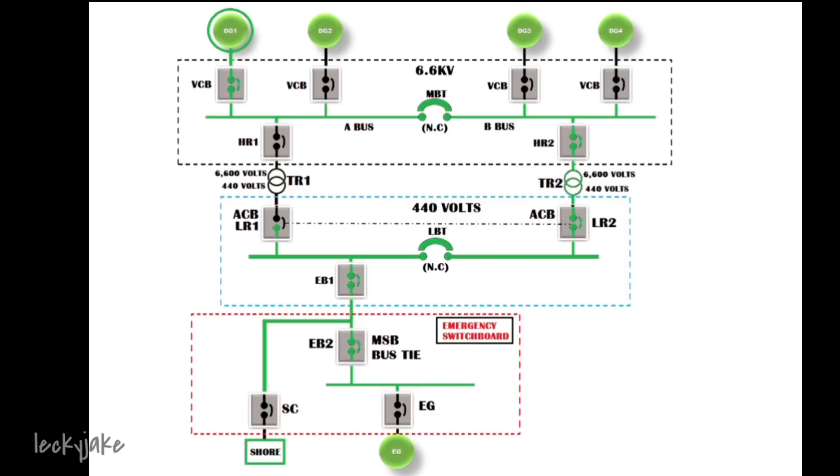So let's say the TR2 is now the running transformer and we have decided to run another generator which is the DG number 3. Before we can put the VCB in closed position, we need to satisfy the three conditions of the system.